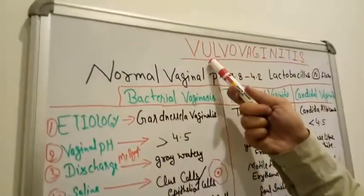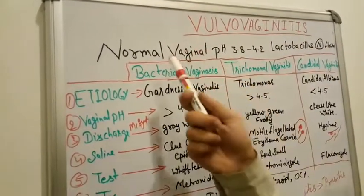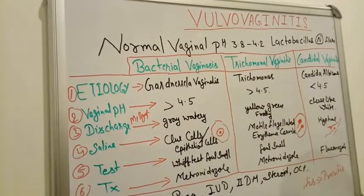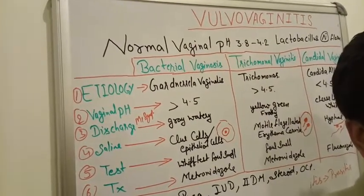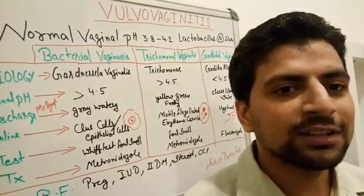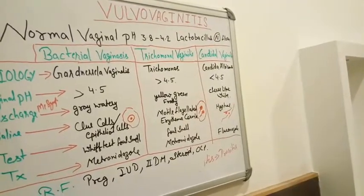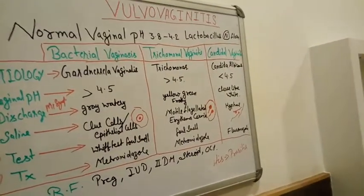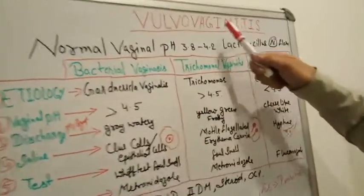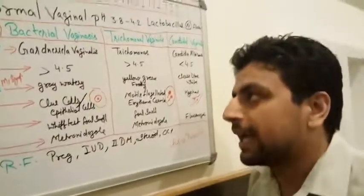Our topic is vulvovaginitis. Dr. Lal Singh, I really want to ask: what is the normal vaginal pH? The normal vaginal pH is 3.8 to 4.2, and the normal vaginal flora is Lactobacillus.